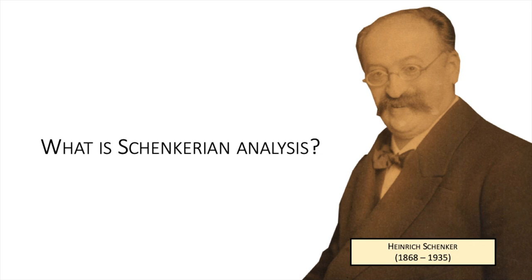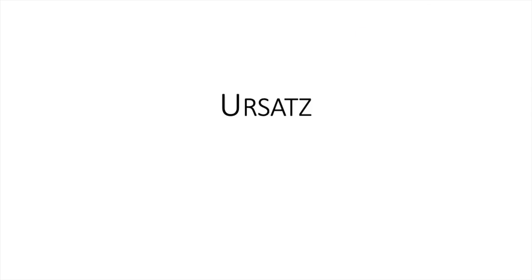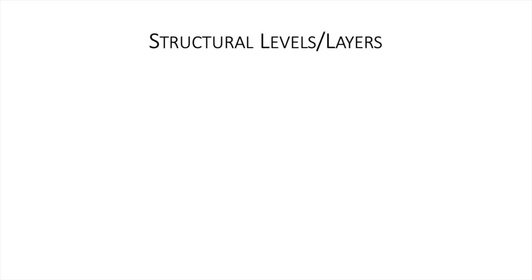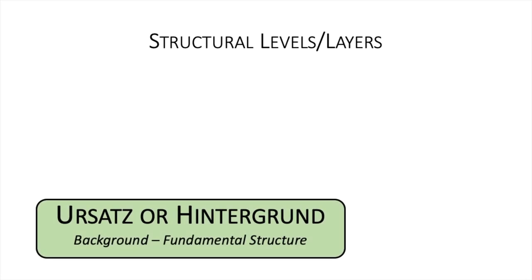Schenkerian Analysis is probably most well known for the idea of the Ursatz. It's what most people think about when they think of Schenkerian Analysis. Ursatz is a German term that translates to 'fundamental structure.' The goal of a Schenkerian Analysis is to understand the structure of a piece of music at various levels. There are three structural levels, or layers, that we're going to want to understand, one of them being the Ursatz. This is also called the background layer.